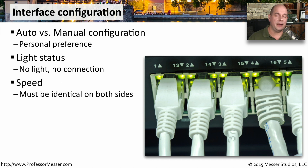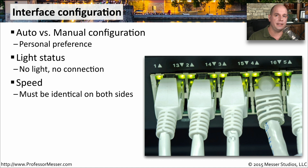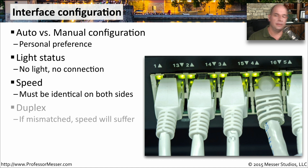One reason a light may not be turning on is that the speed setting on both sides is mismatched. You might have one side set to gigabit and the other set to 100 megabit, and that will cause the connection to never light up. You'll never get a signal between those two devices, and you won't see any lights appear on the network interface card.